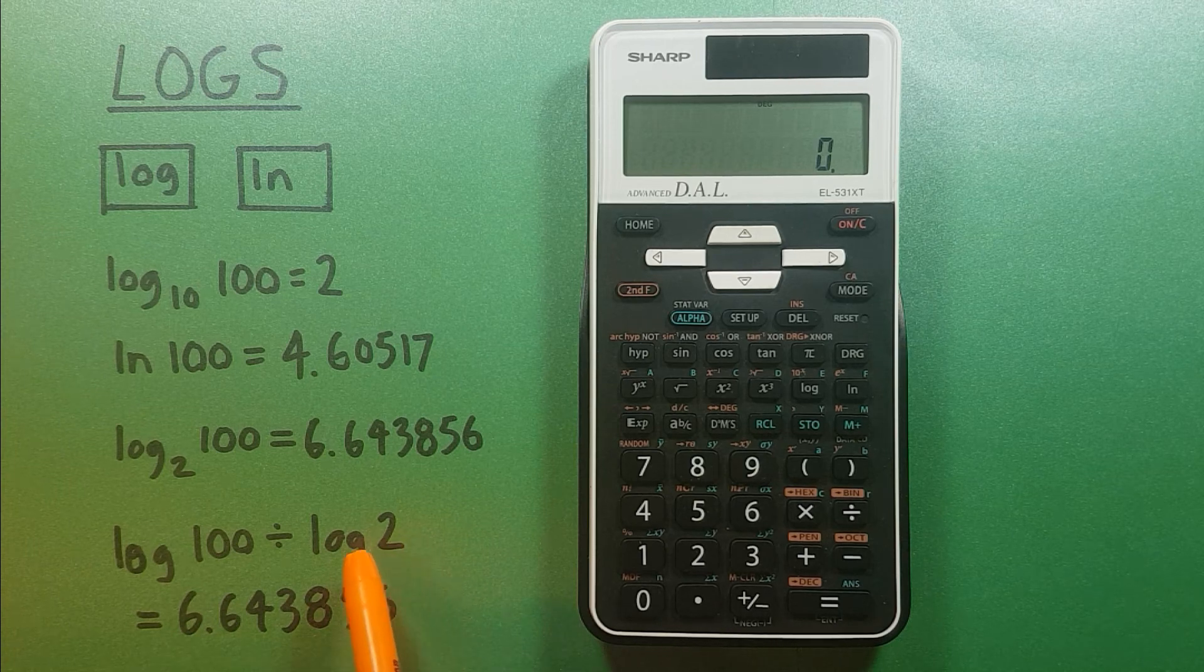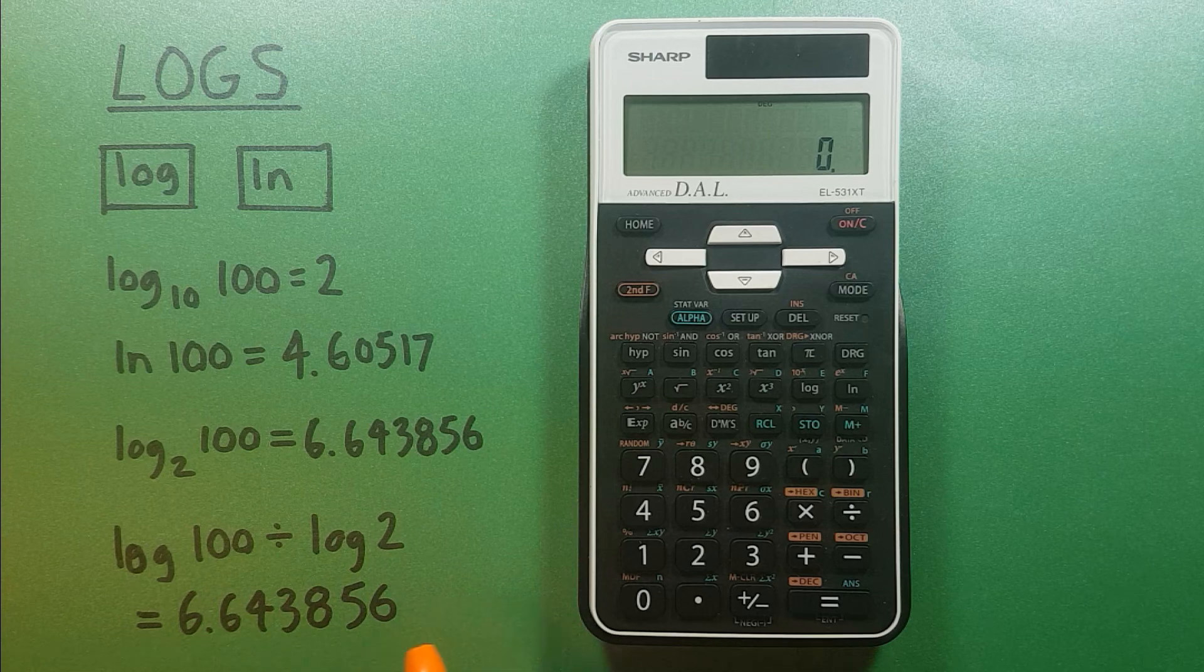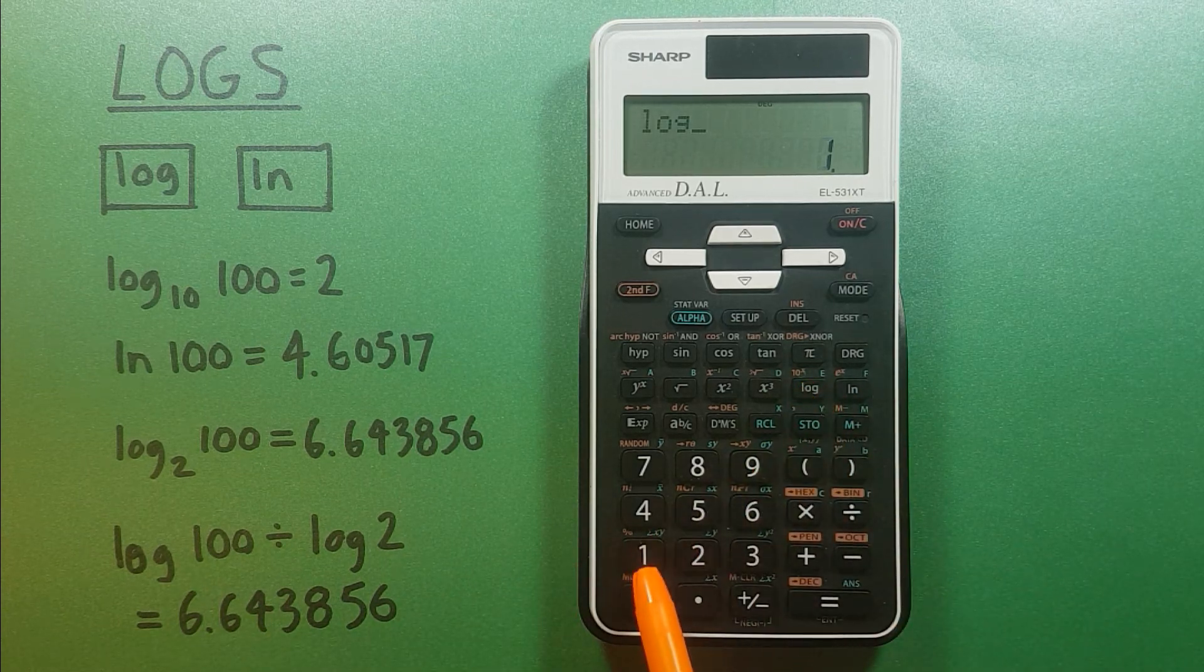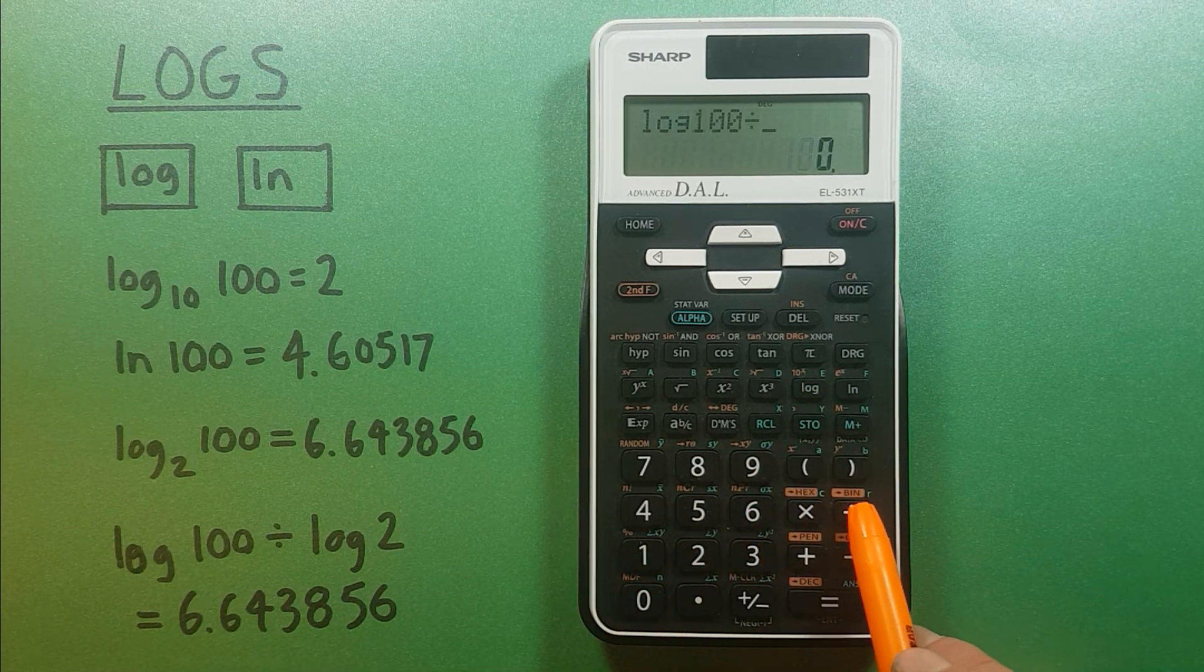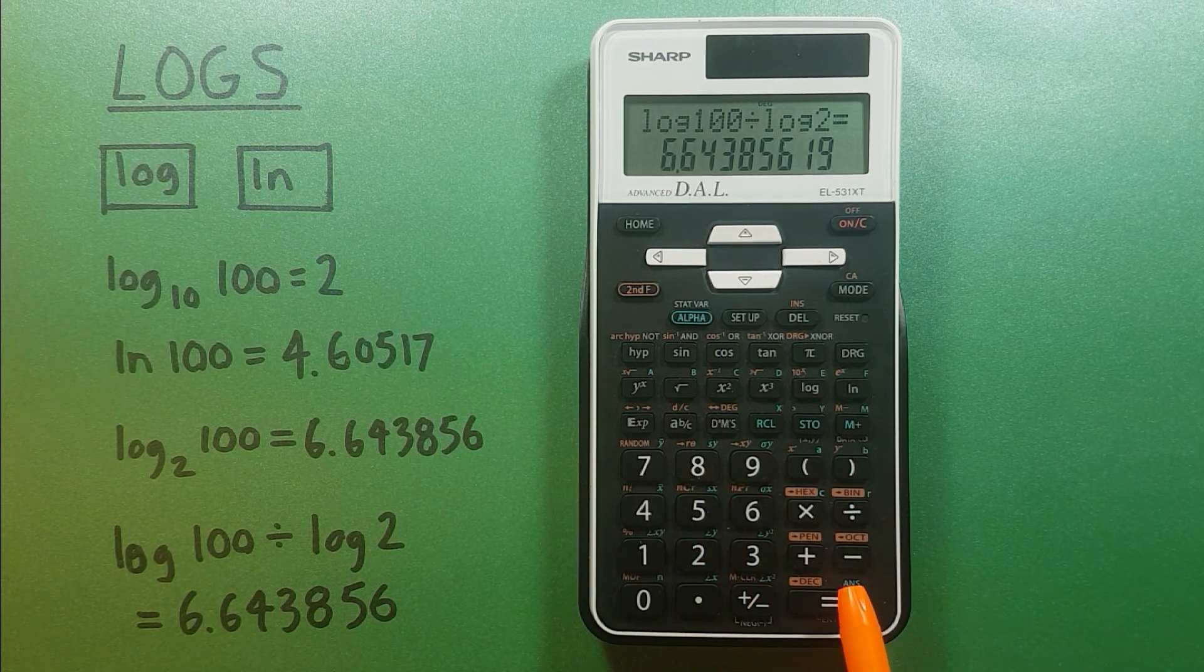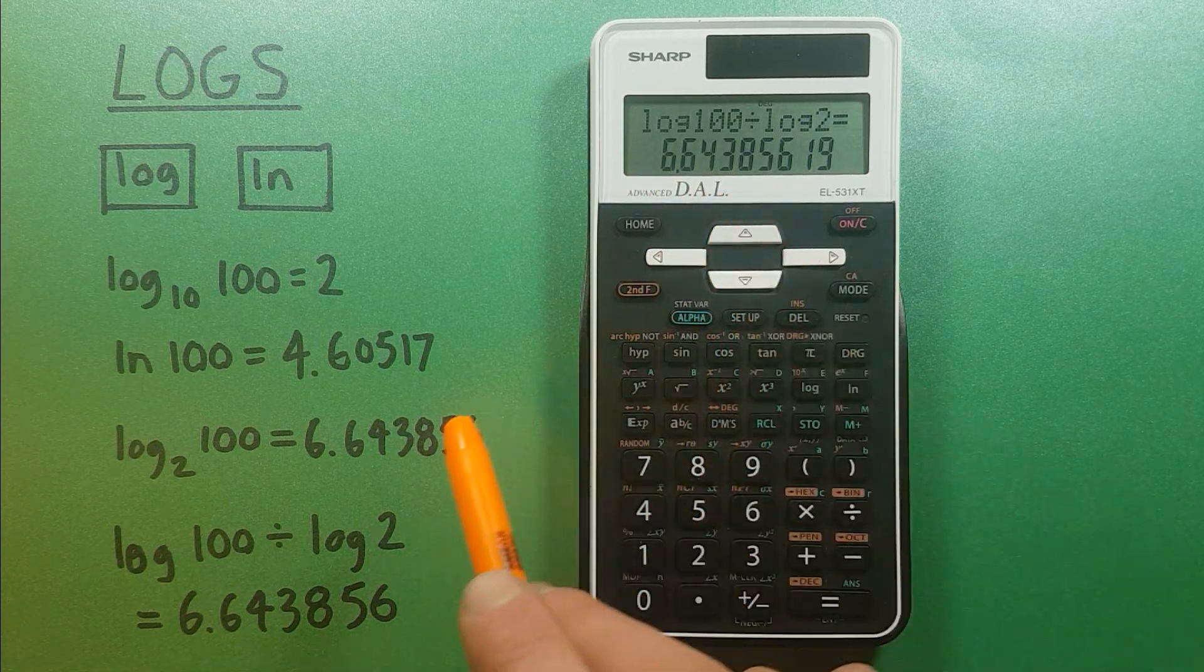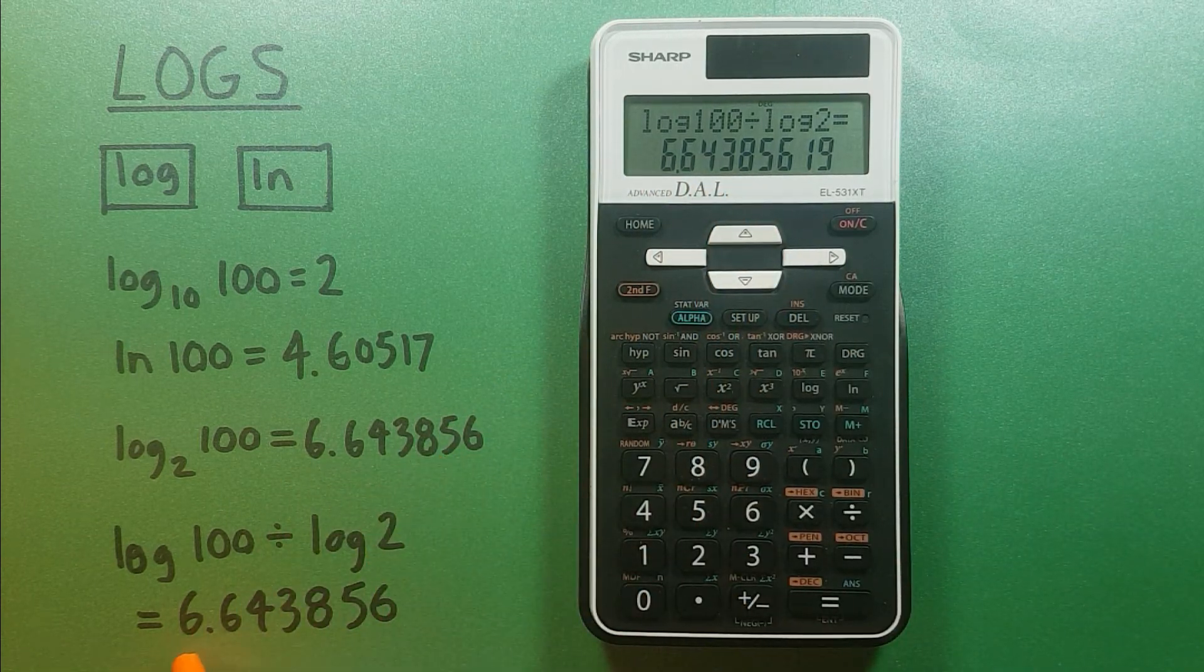So for example, if we wanted to find log base 2 of 100, we would enter log 100 divided by log 2 and press equals. This gives us 6.643856, which we can see is the correct answer.